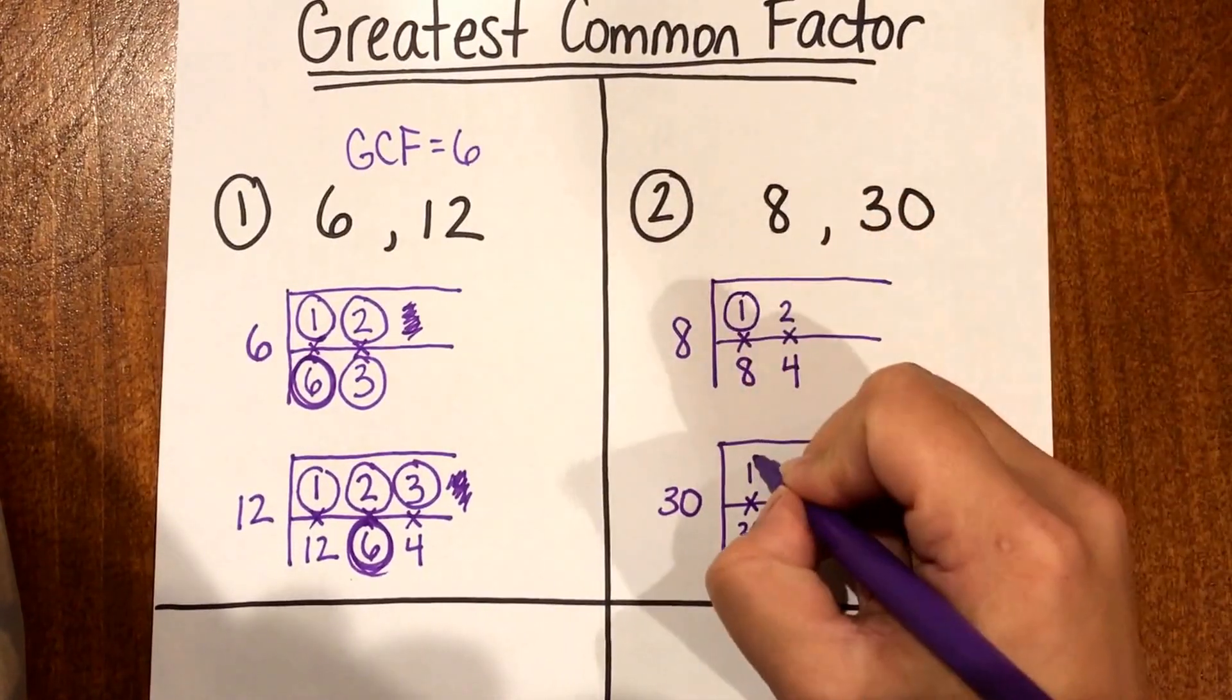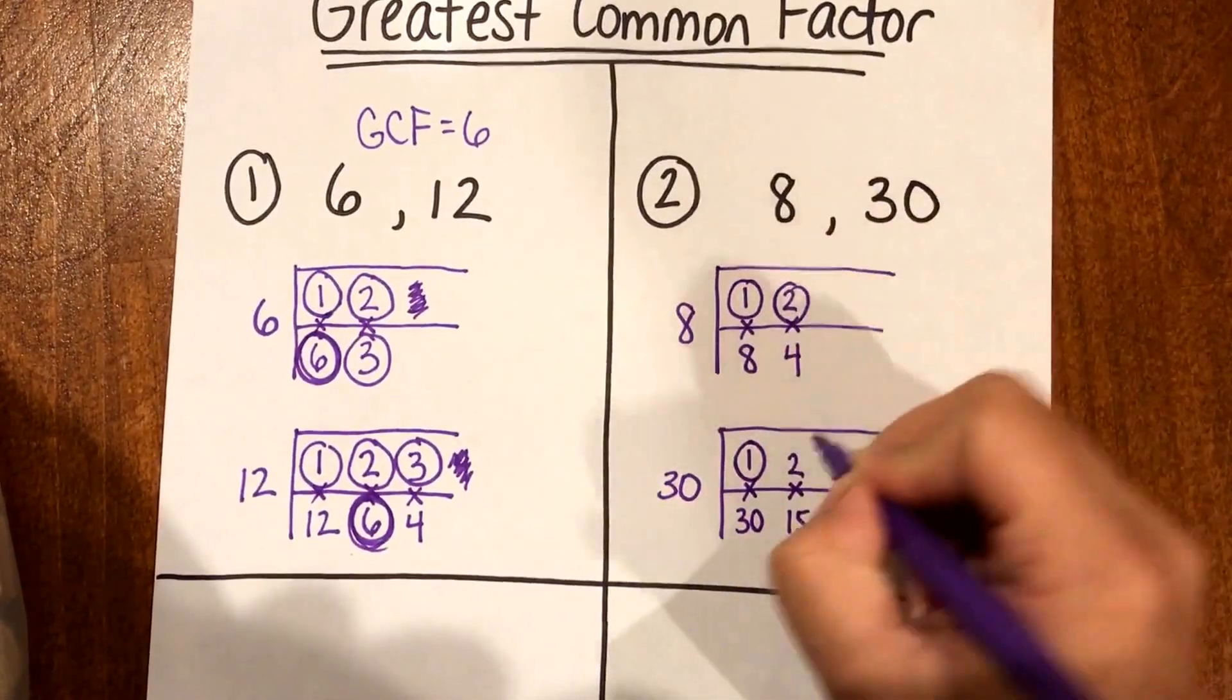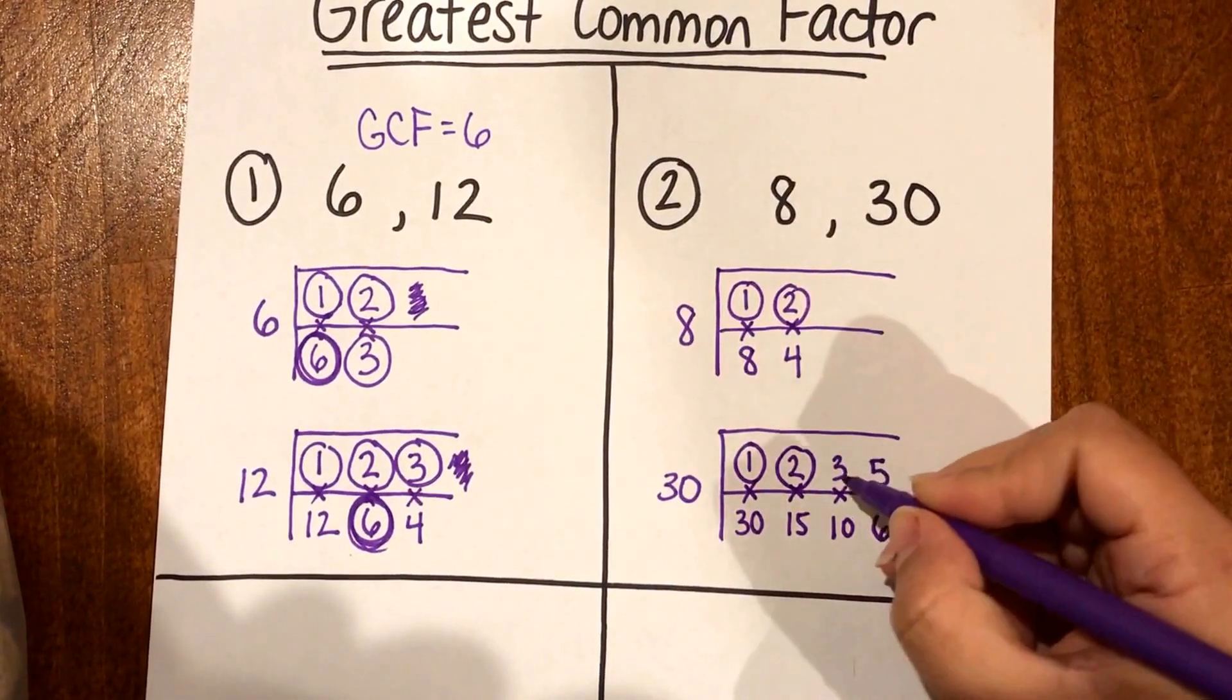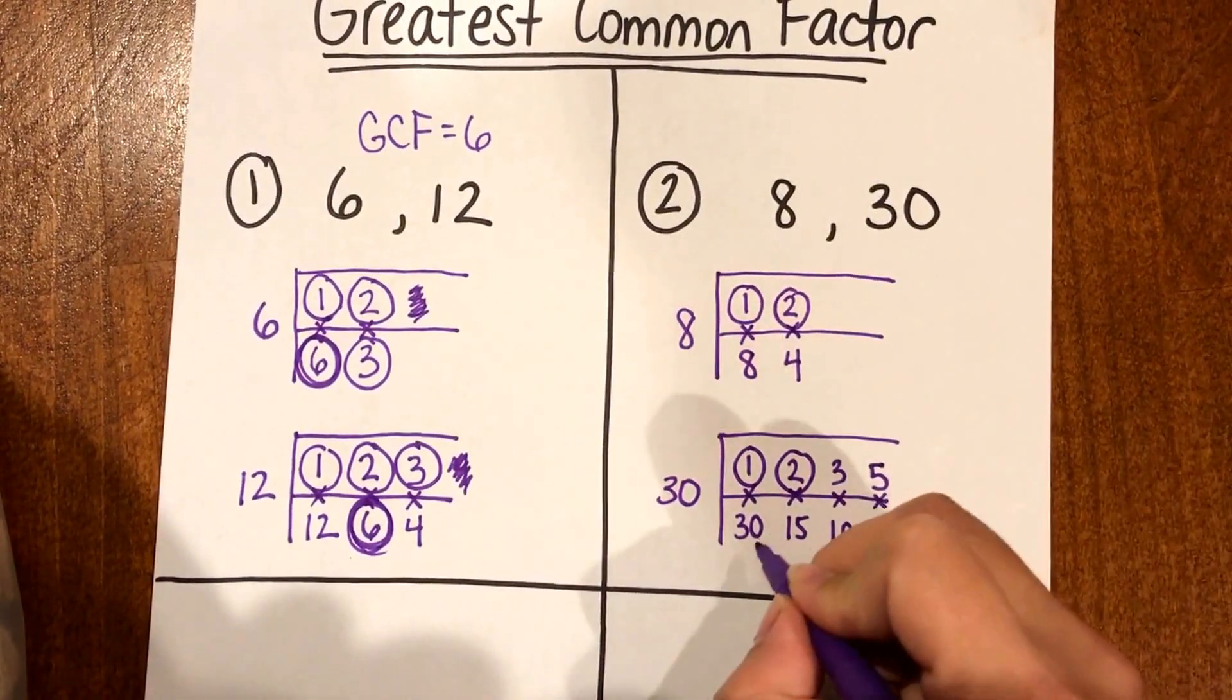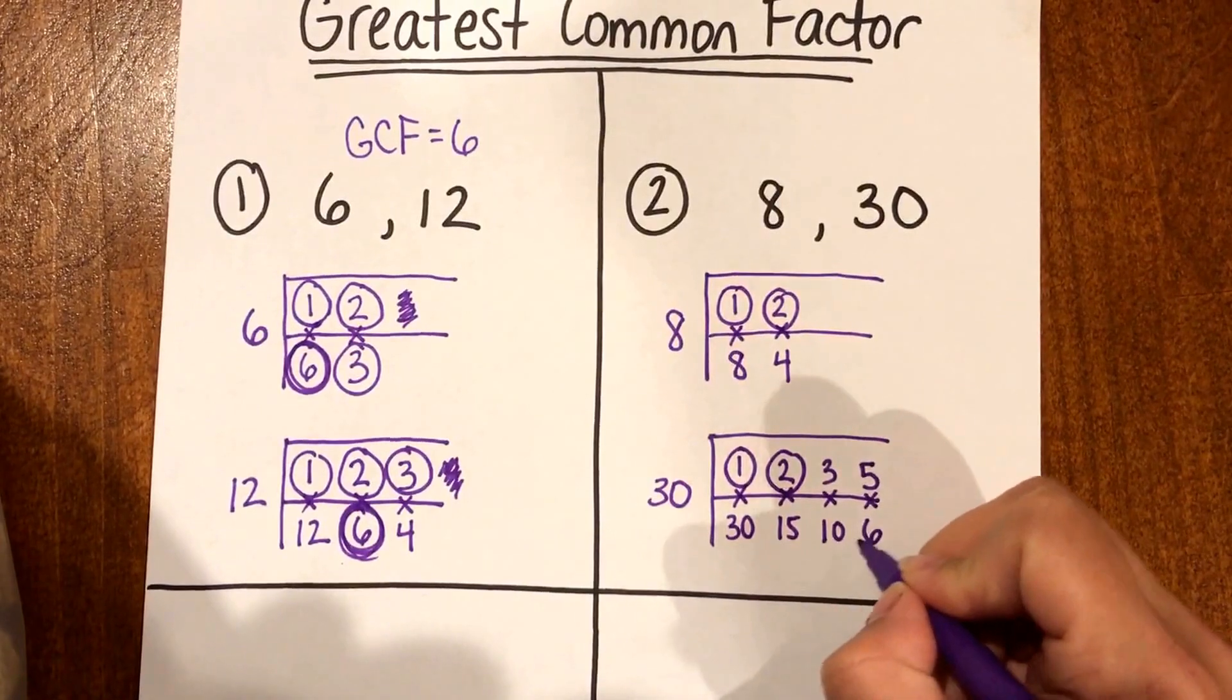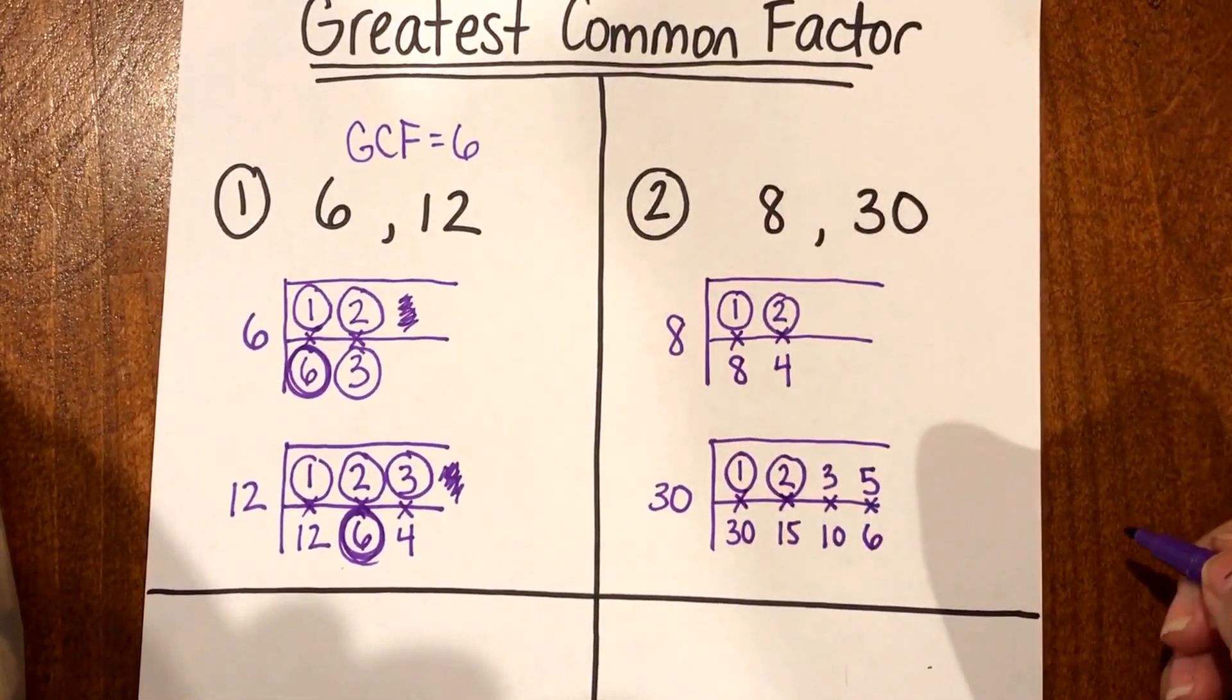And then I can see that 1 is the same, 2 is the same, I don't have any 3s, no 5s, 30, 15, 10, 6 nothing else is the same.